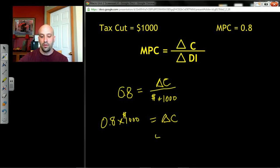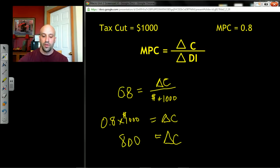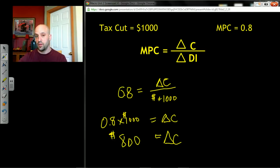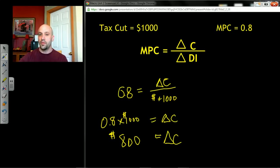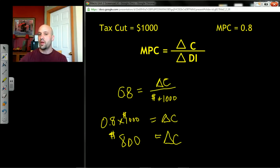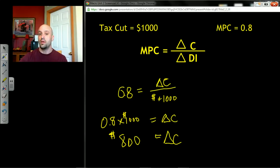That means your change in consumption is going to be $800. As a result of that thousand-dollar tax cut, you're going to spend eight hundred dollars. Notice that's different than if the government had just spent it directly — if the government spends the thousand dollars, all of it goes into the income stream. But if it cuts taxes by a thousand dollars, only the portion people spend (their MPC) goes into the income stream; the rest gets saved.